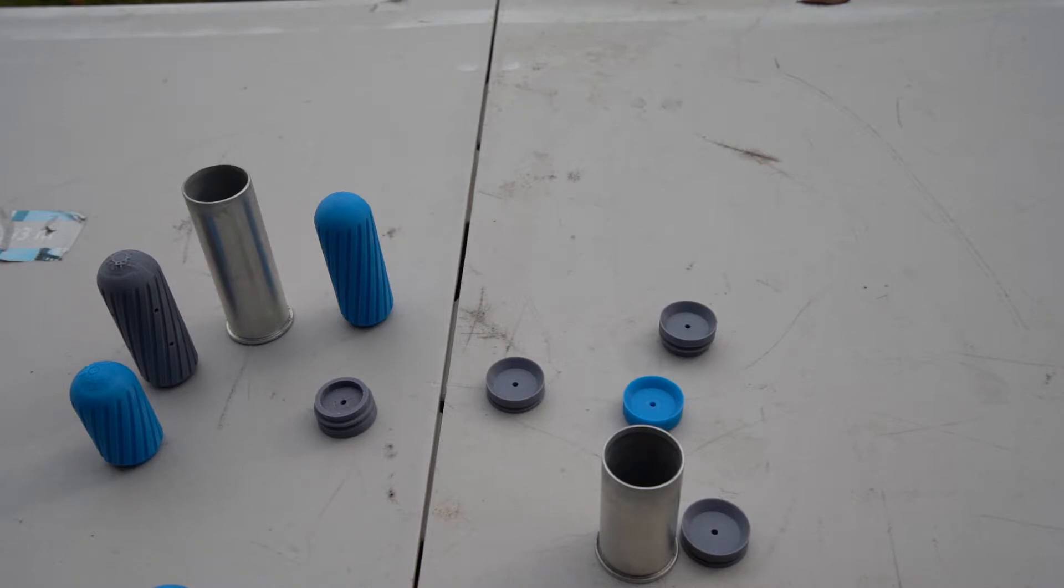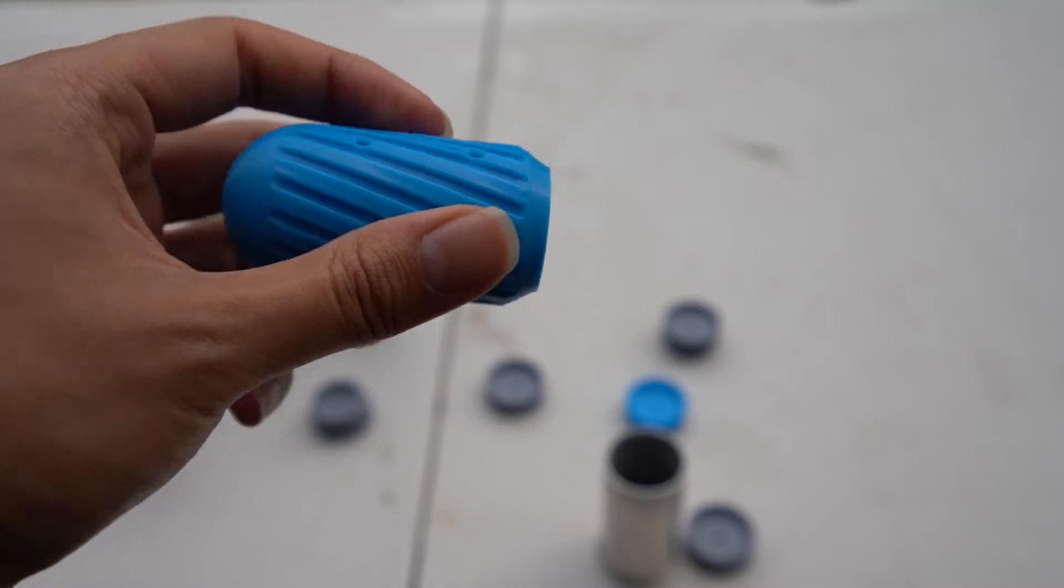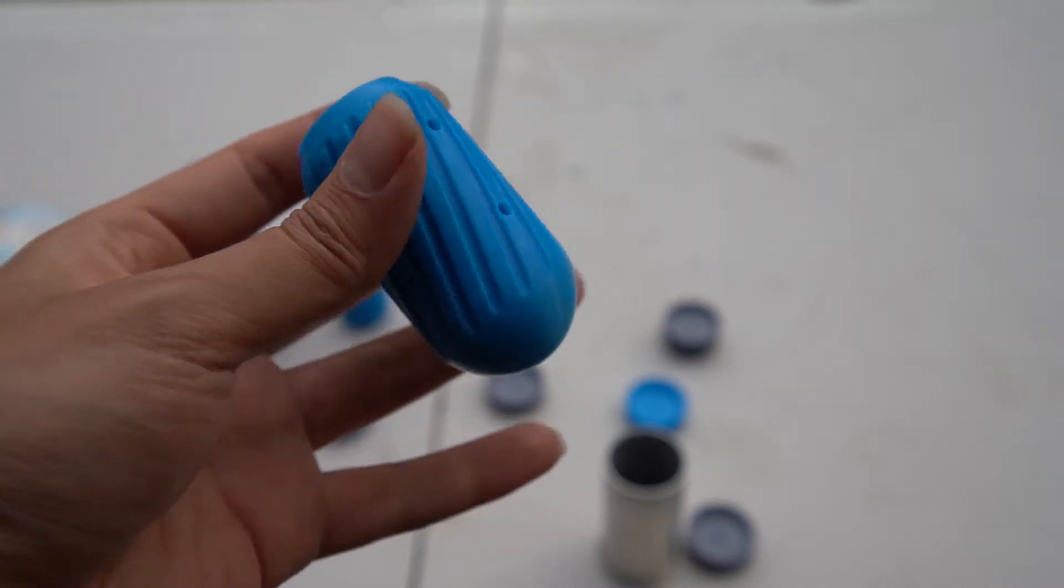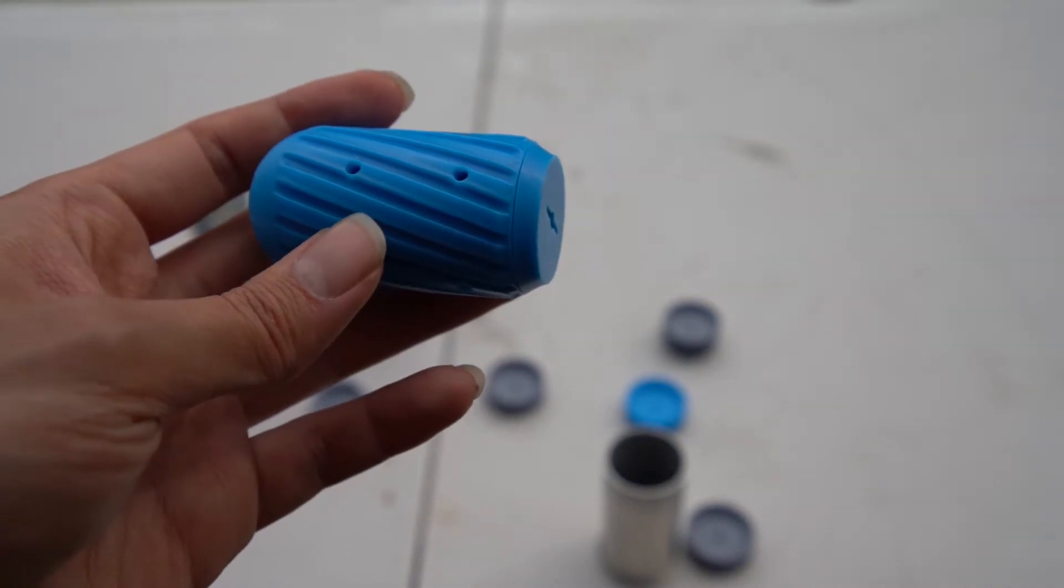Fourth, the boat tail design is better for aerodynamics in theory. As you can see here, the boat tail, which as I have said, is better for aerodynamics in theory.